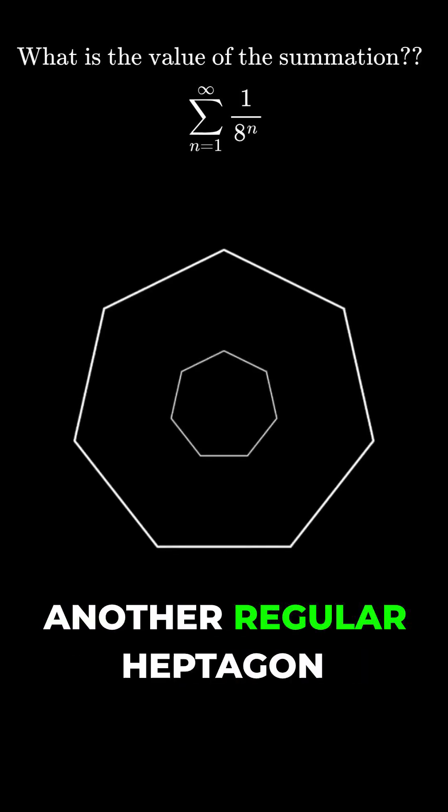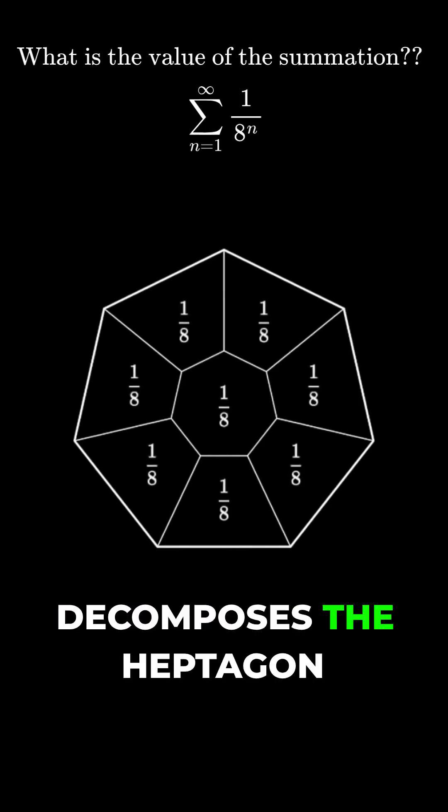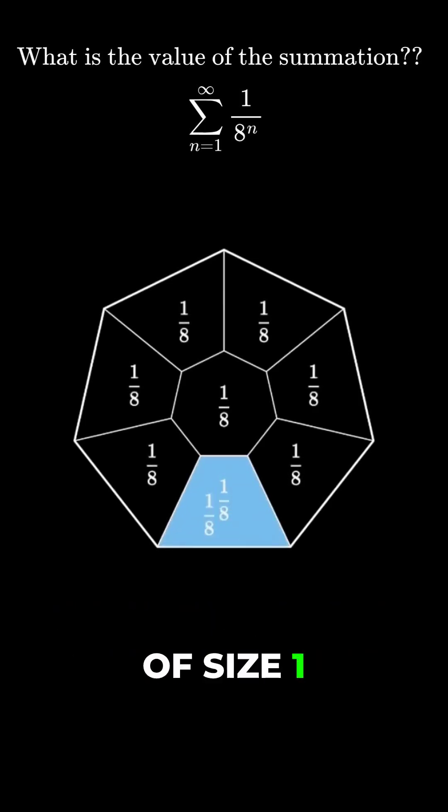Start with a regular heptagon and draw another regular heptagon inside with area one-eighth of the original. This decomposes the heptagon into eight pieces of size one-eighth.